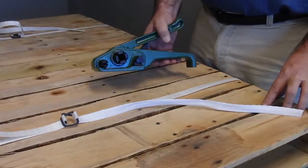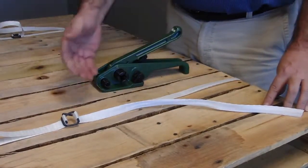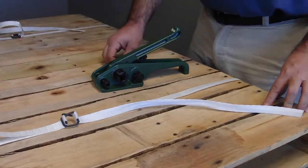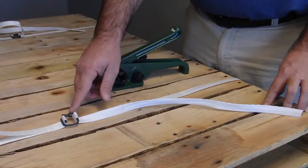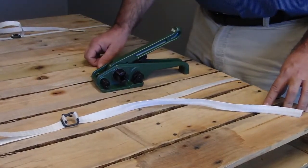This is a lumber cord tensioner. We have already put the strap around the pallet and threaded it through the buckle as we showed you in our last video.